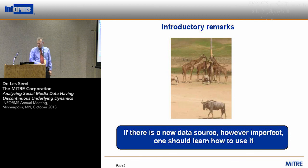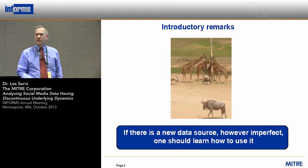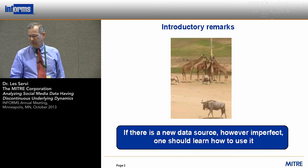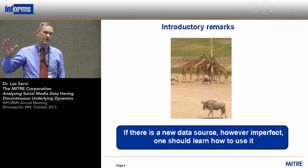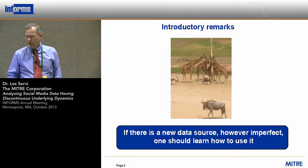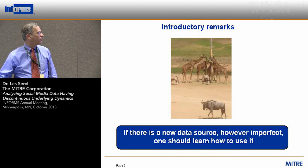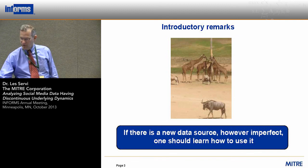The attitude that I have is that if there's a new source of data, however imperfect it is — and social media is a very imperfect source — one should use it. I have this picture of giraffes here because I gave a talk at a National Science Foundation workshop last summer and stopped by a wildlife reserve. I discovered that animals like to stay near giraffes because giraffes are tall and they see dangers before other animals do. So staying near a giraffe makes you a little safer — that's an example of an imperfect data source that's useful, although it's very imperfect.